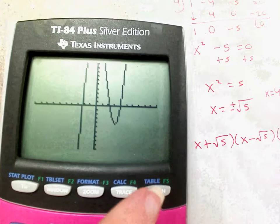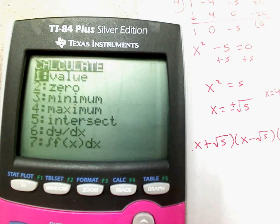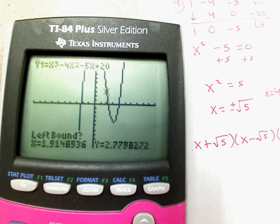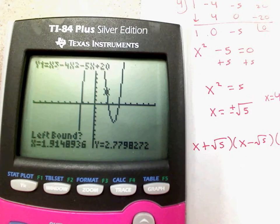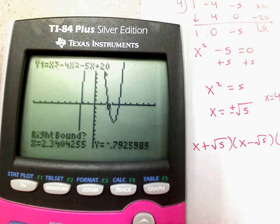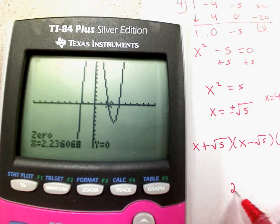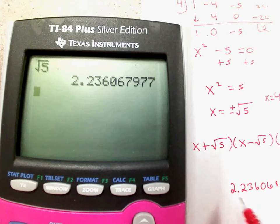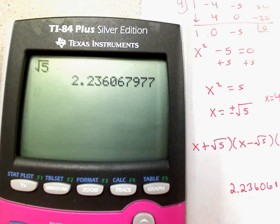Okay, just to make sure, if I look at my graph and I go second, calculate, find the 0. Okay, so let's just find this one. So, I'm going to go to the left of it, which is above it, to the right of it, which is below it, press enter, enter, and it tells me that the answer is 2.236068. Well, if I go to my home screen and I type in the square root of 5, I get 2.2360, and then it rounds.